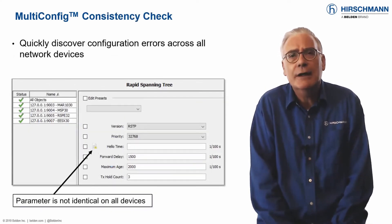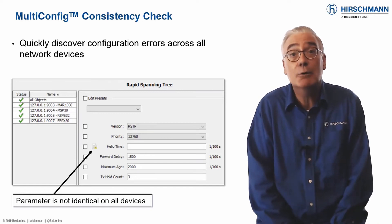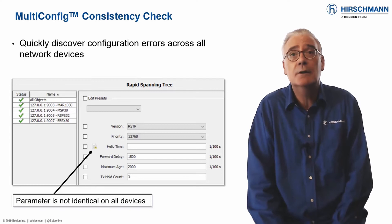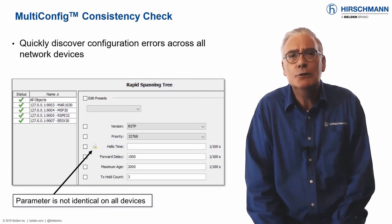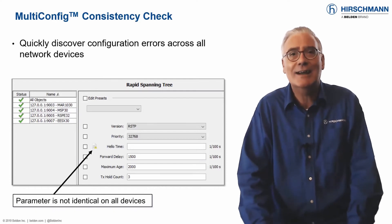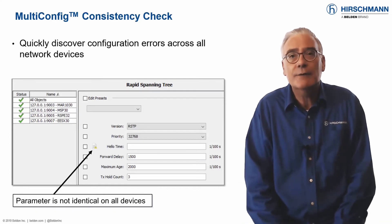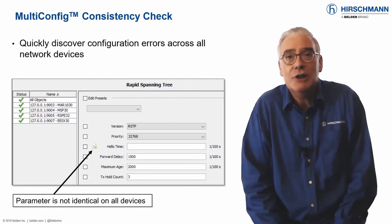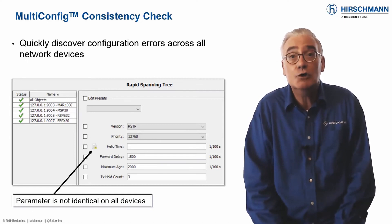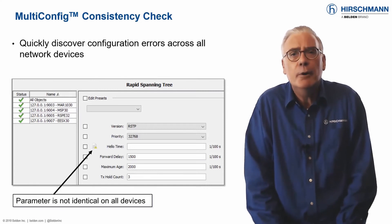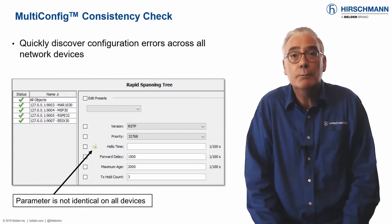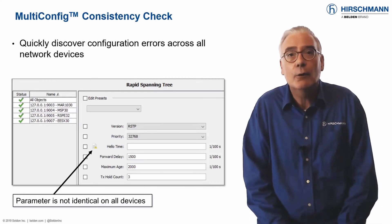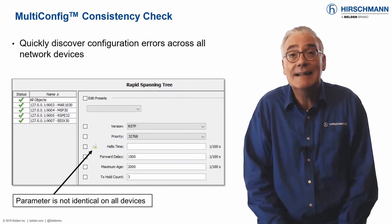Consistent configuration across switches is essential for stable network operation and maximum uptime. There are many ways to analyze configurations across devices, but sometimes all you need is a quick check. The multi-config consistency check provides you with a fast and easy solution. First, select the switches that you want to check. Then select the relevant function from the multi-config menu. The parameters for this function will be displayed.